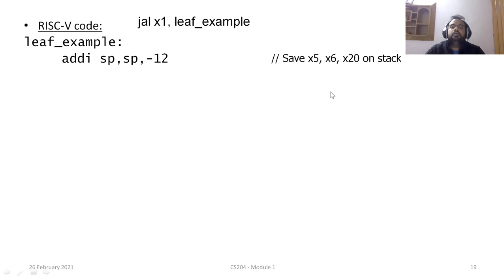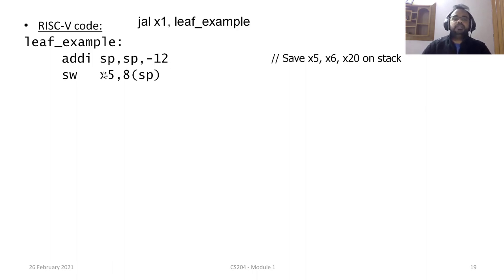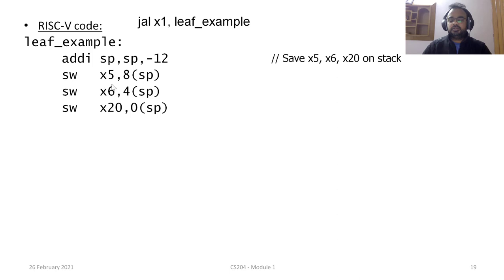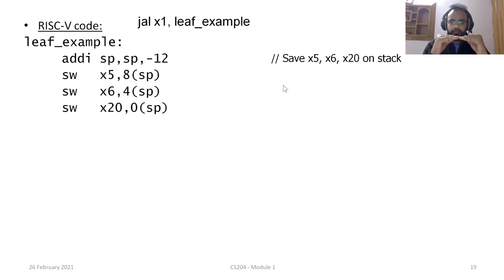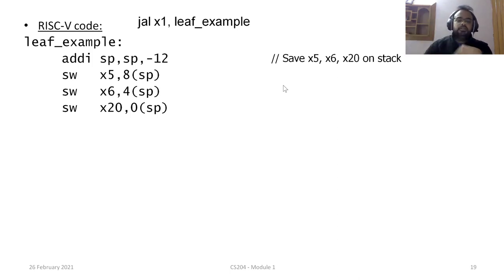We decrement by 12 because each register is 32 bits — 4 bytes — and memory is byte addressable, so each register takes 4 spaces; three registers require 12. We place X5 first, then X6, then X20. The offsets added to the stack pointer — 0, 4, 8 — must be consecutive; we cannot leave any space empty. We go one by one, using the stack pointer plus the appropriate offset for each value.